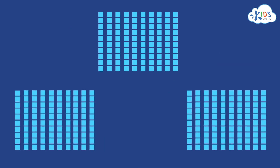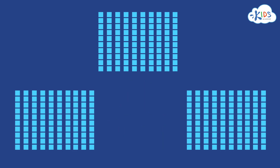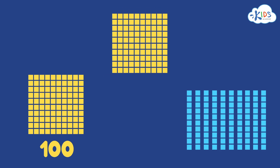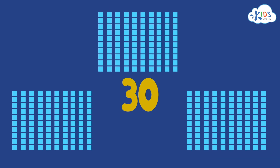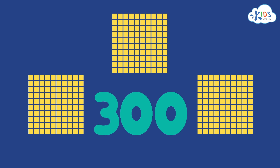What about thirty longs? How much is that worth? Is there an easier way to say thirty longs — is there a trade we can make? If each long is worth ten, we can count each long as ten, just like before. If we put ten of the longs together, we can trade it for one hundred. If we take another ten longs, we can trade it for another hundred. We can take the last ten longs and trade it for another hundred too. Now instead of counting the thirty longs, we can just count the three hundreds: one hundred, two hundred, three hundred. Thirty longs is the same as three hundred. That was a lot easier.